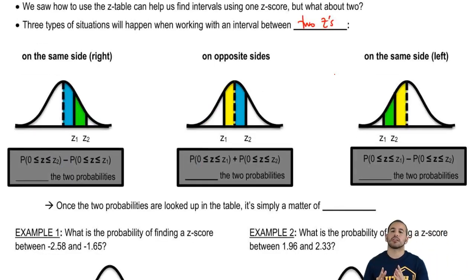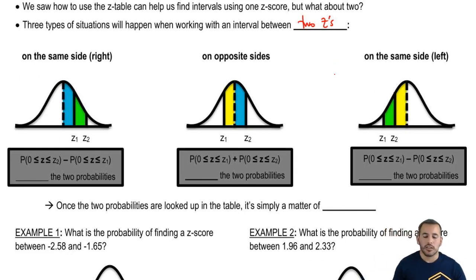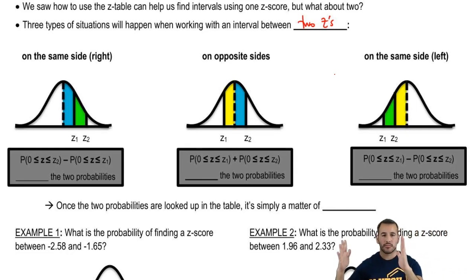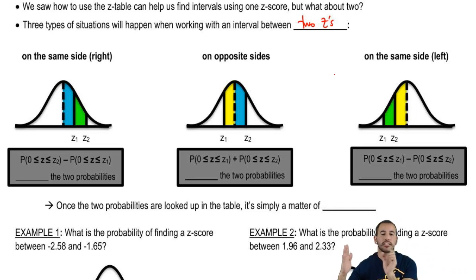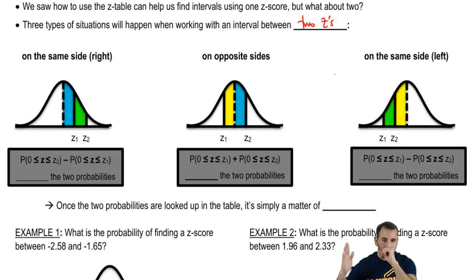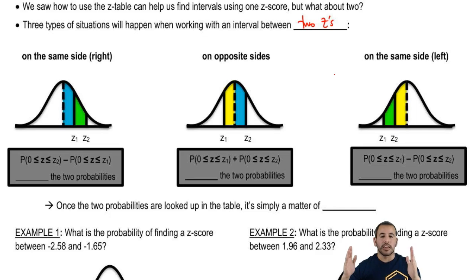So they're both on the same side on the right, they're both going to be positive z-scores. What we do is we're going to have the probability from zero to z2, the bigger one, and then we're going to have this smaller chunk from zero to z1. So what we end up doing to get the chunk in between — the green part right in the middle — is we get the larger probability and subtract the smaller one so that we're left with just whatever's left over.